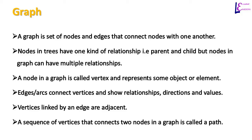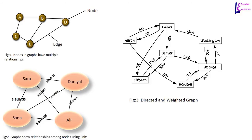A graph is a set of nodes and edges. Edges or links connect nodes with one another. In a tree, an edge represents a parent-child relationship, but in a graph there are more than one kind of relationships. Nodes in a graph are often referred to as vertices, and nodes can represent any object or element. Edges or arcs can show direction, relationship, and weights or values between nodes. Directly connected nodes by a single edge are called adjacent nodes, and a path between two nodes is a sequence of vertices connecting those two nodes. The first figure shows a simple graph with nodes and edges, the second shows relationships among different people, and the third shows flights between cities along with the distances.